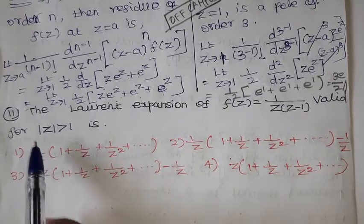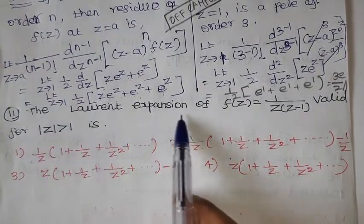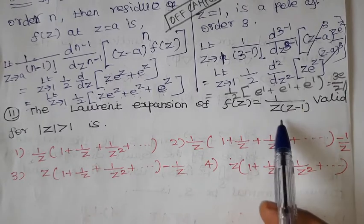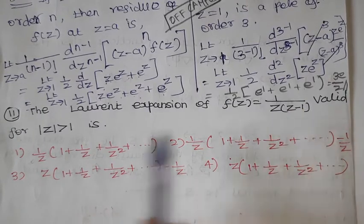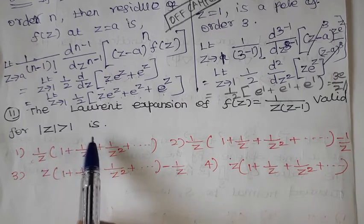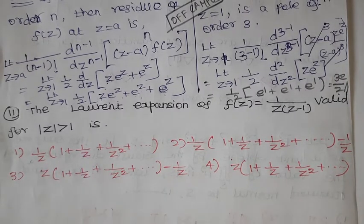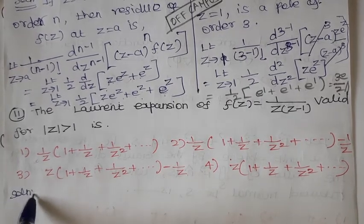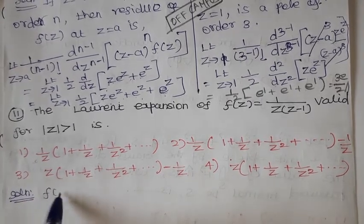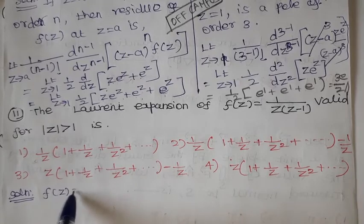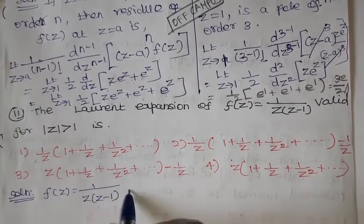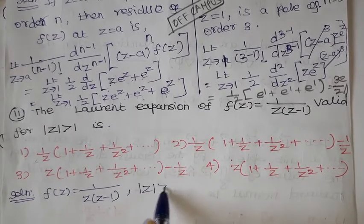Problem number 11: The Laurent expansion of f(z) = 1 / [z(z-1)] valid for |z| > 1. We have to find out the Laurent expansion of the given function f(z). Solution: f(z) = 1 / [z(z-1)] and given |z| > 1.